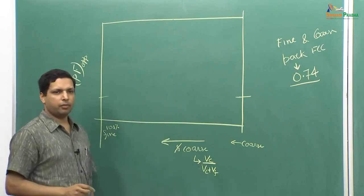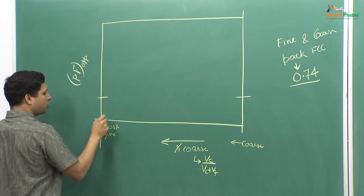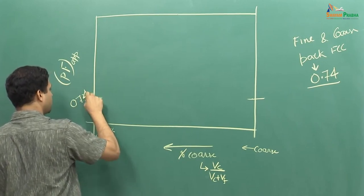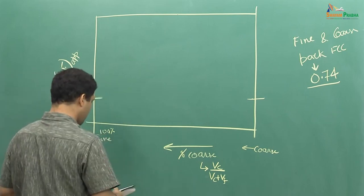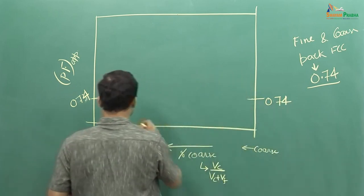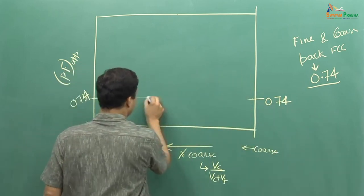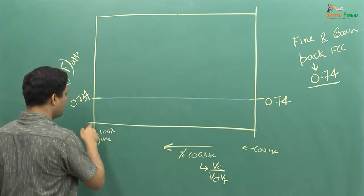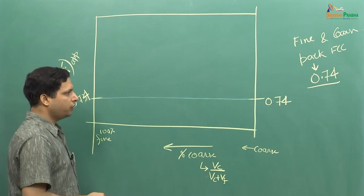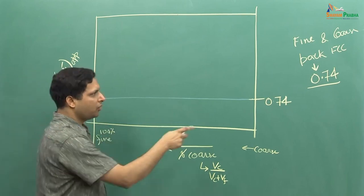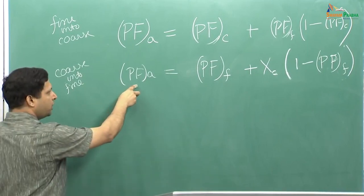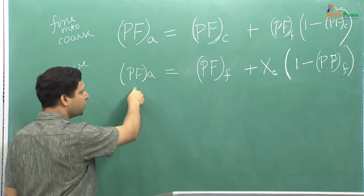When you have only fine particles — 0 percent coarse — the packing fraction is 0.74. In the other extreme with only coarse particles, it is also 0.74. When you keep adding coarse particles into fine, at a certain range you will see 0.932. When all the fine particles fill the coarse pores, you get 0.932, and when coarse particles fill the fine particle pores, you again get 0.932. The maxima in both cases is the same.